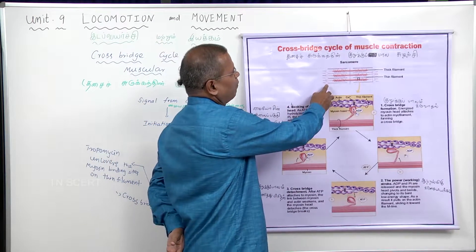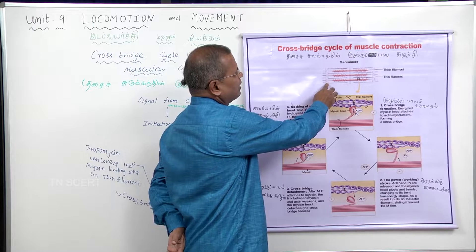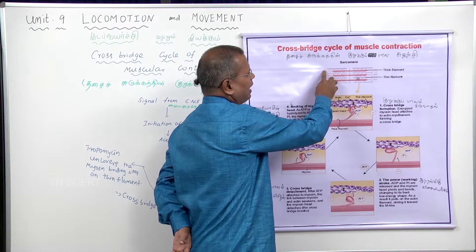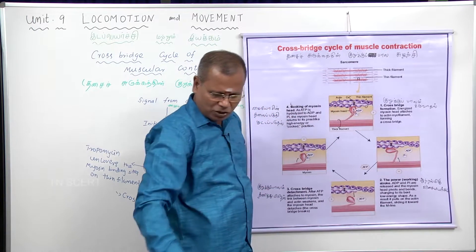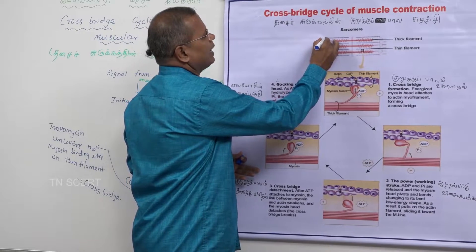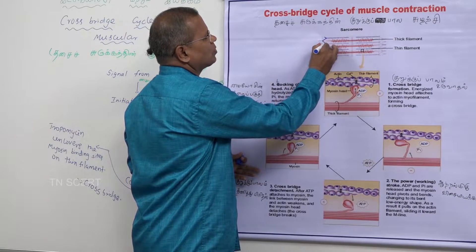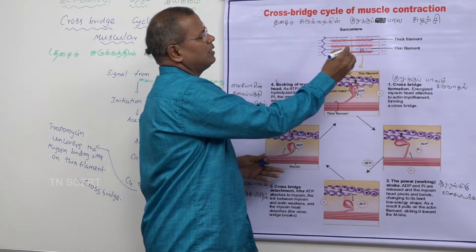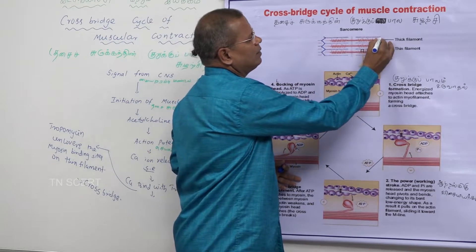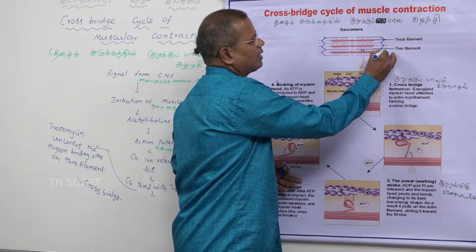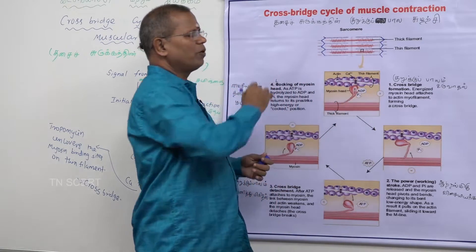The sarcomere runs from this Z line to this Z line — that is the structural and functional unit. In the Z line, this is the RmH.